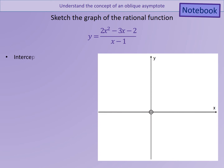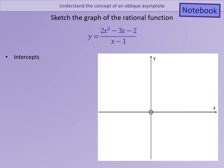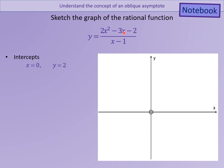So to sketch the rational function, what we need to do is look for some of the key points. The first key points I'm going to look at are the intercepts with the axes. To do that, we plot when x equals 0, what is the y value? And when y equals 0, what is the x value? When x equals 0, that's easy to calculate — you're just putting 0 in for the x's. Minus 2 over minus 1, which is where we get 2 from. So we can plot that.